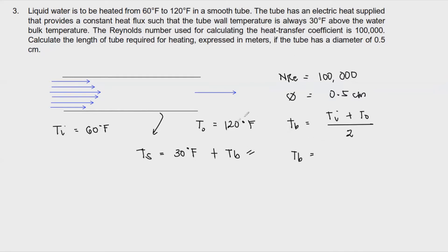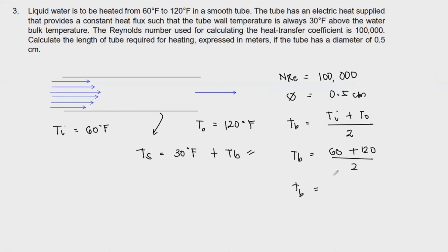So the bulk temperature is (60 + 120) / 2 = 90 degrees Fahrenheit.